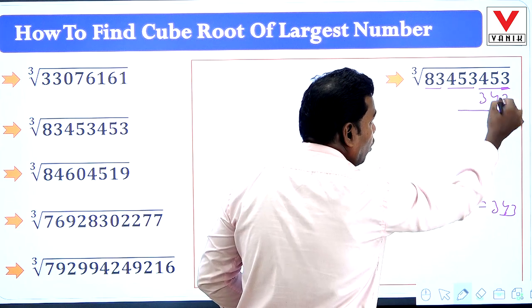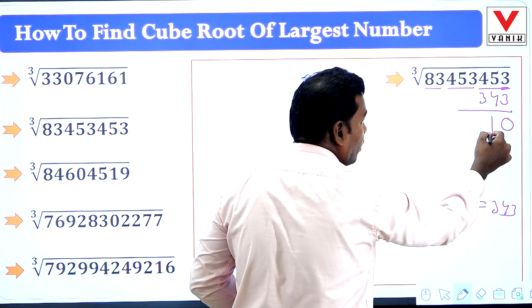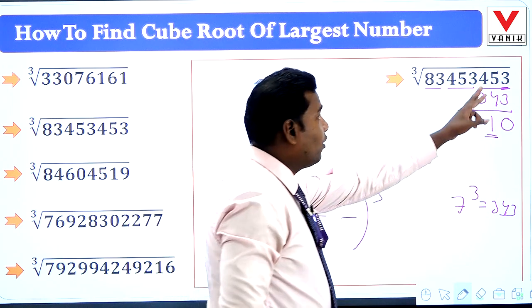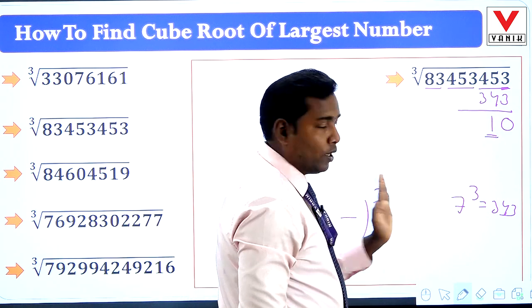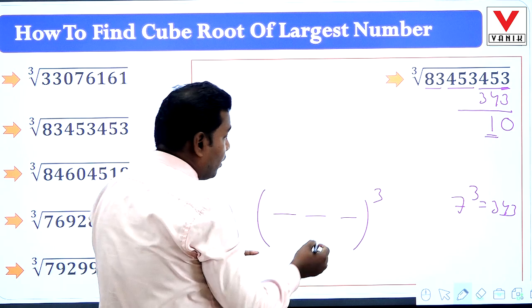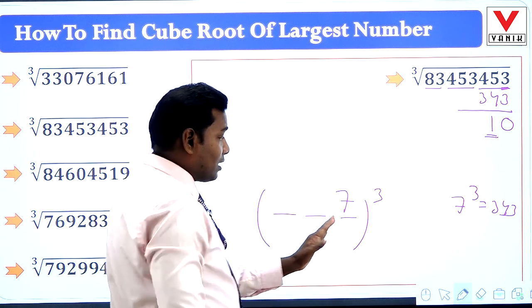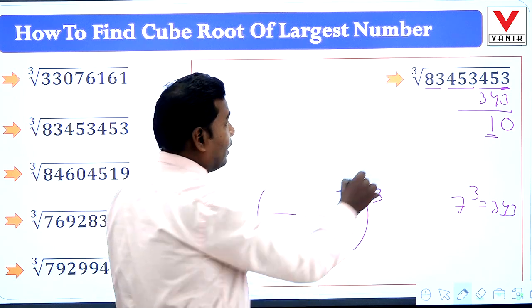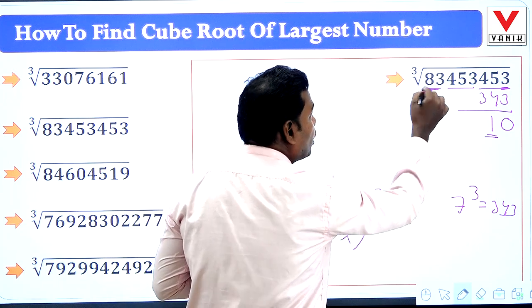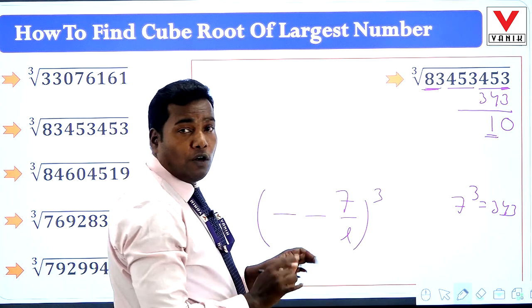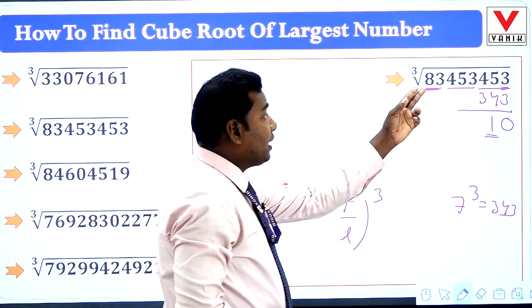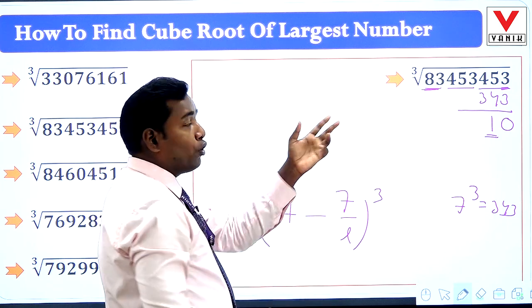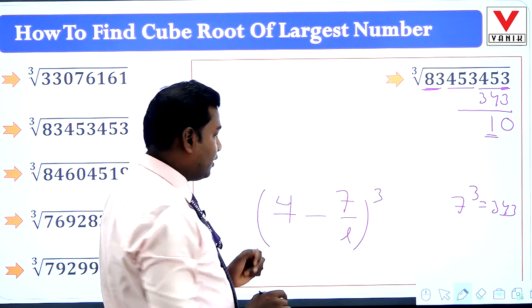The first group is 83. Now 4 cube is 64 and 5 cube is 125, but 64 is less than 83 and 125 is more, so we take 4 as the first digit.